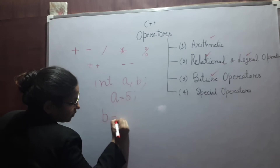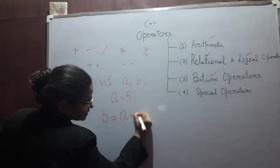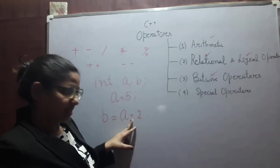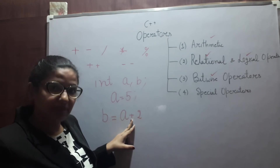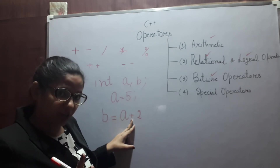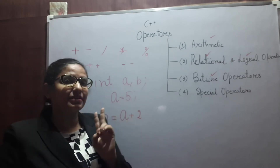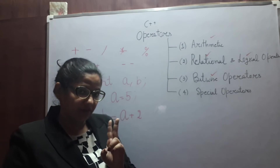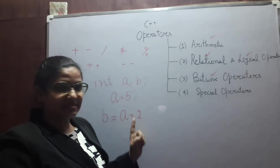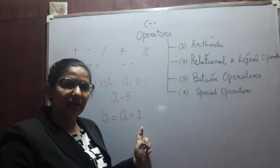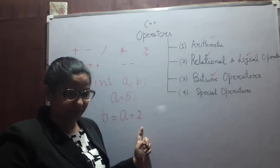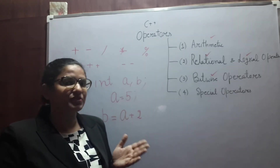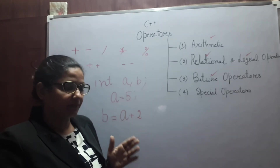In the next statement: B equals A plus two. Plus is a binary operator, which means it requires two operands — one on the left-hand side and one on the right-hand side.